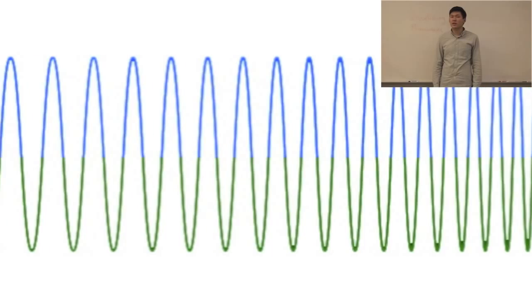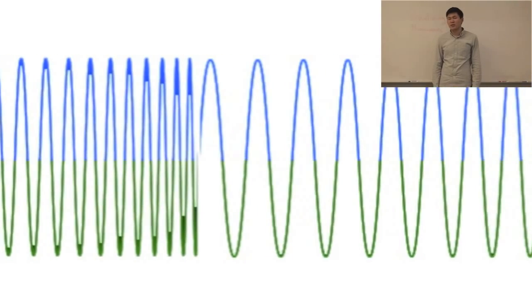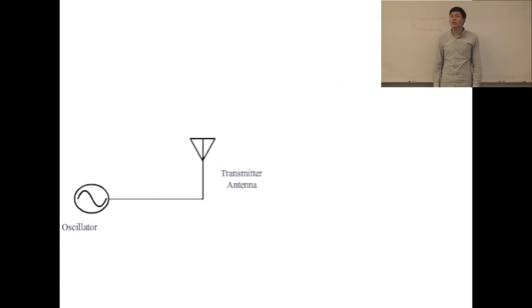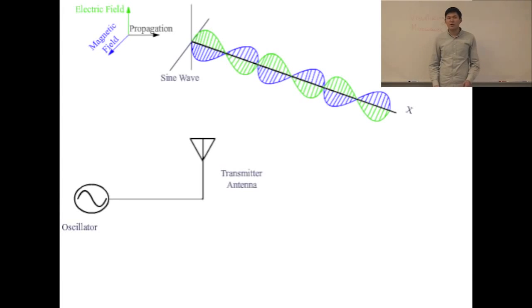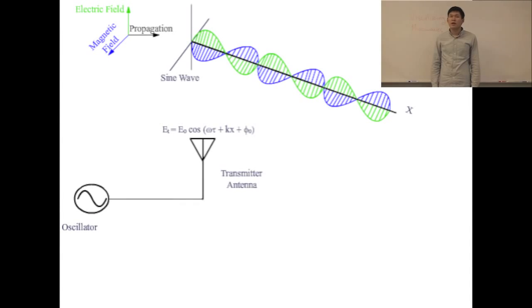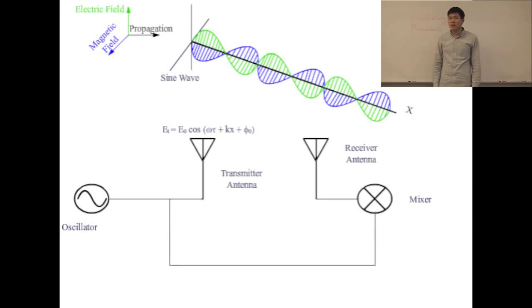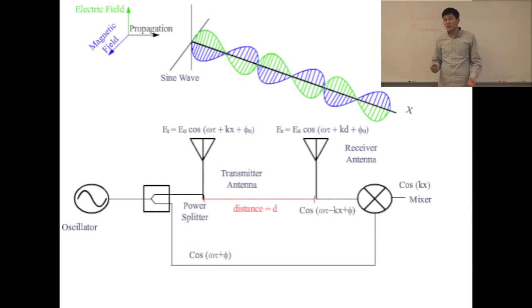In this video, we are going to show you our experiment to visualize RF waves. Using an oscillator, we first generate a single frequency RF electromagnetic wave. Now, if we have a receiver at distance d away from the transmitter, we can receive a signal that is represented by this ER expression. If we compare the transmitted signal to the received signal, we can extract a phase difference between them by applying the signal to a mixer.